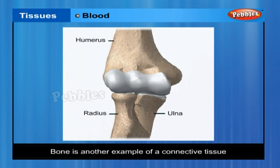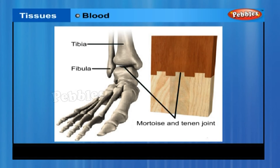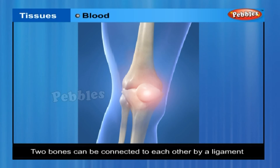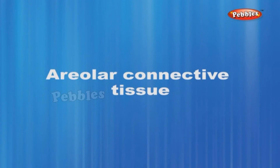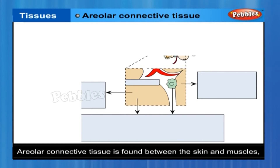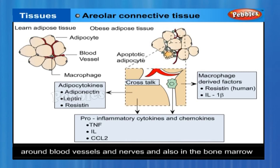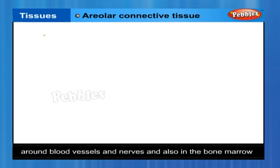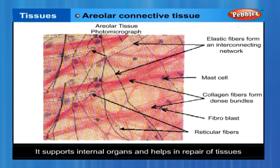Bone is another example of a connective tissue. It forms the framework that supports the body, anchors the muscles and supports the main organs. It is a strong and non-flexible tissue. Two bones can be connected to each other by another type of connective tissue called ligament. Areolar connective tissue is found between the skin and muscles, around blood vessels and nerves and in the bone marrow. It fills the space inside the organs, supports internal organs and helps in repair of tissues.